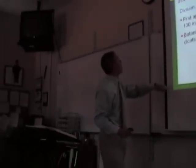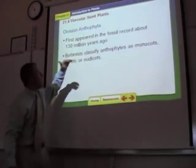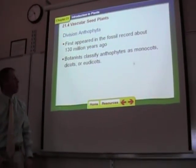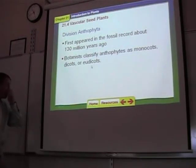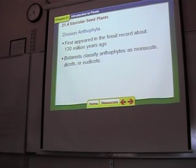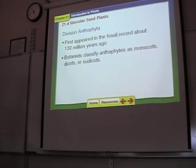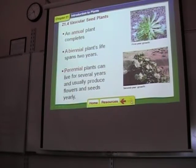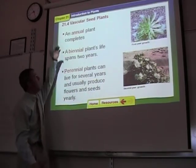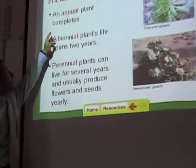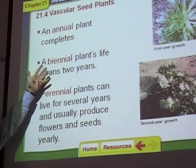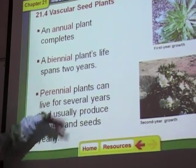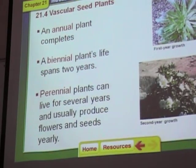We classify anthophyta as monocots, dicots, or eudicots — you may have heard that before. Monocots are your grasses, and eudicots are other types that have leaves with branching veins. We're going to learn about monocots, dicots, and eudicots in a later chapter more specifically. Flowering plants also come in annuals — an annual plant lives for one year — biennials that live for two years, and perennial plants that live for many years.